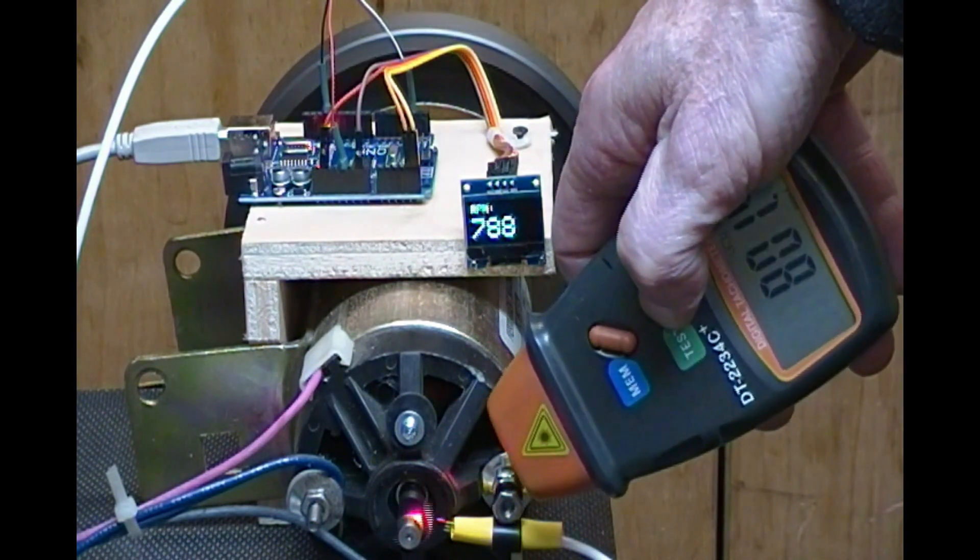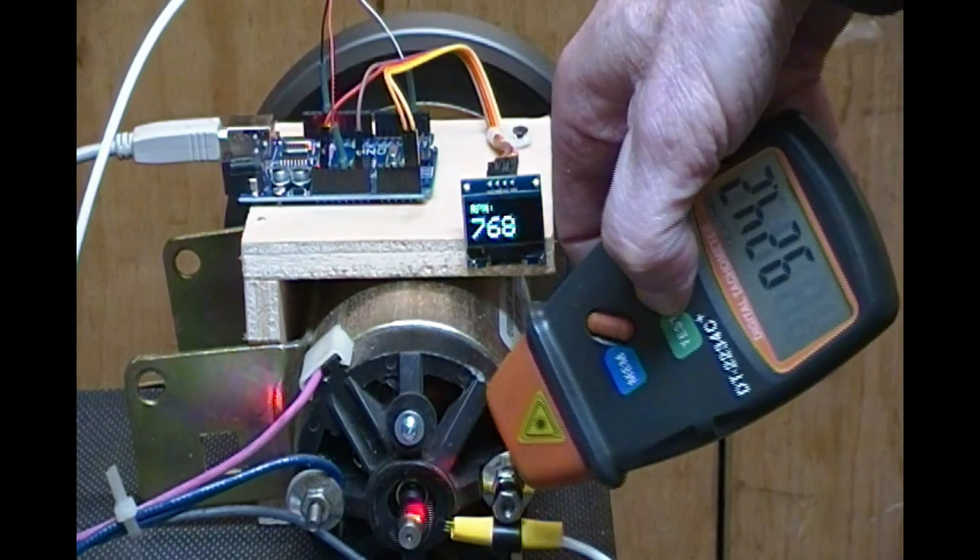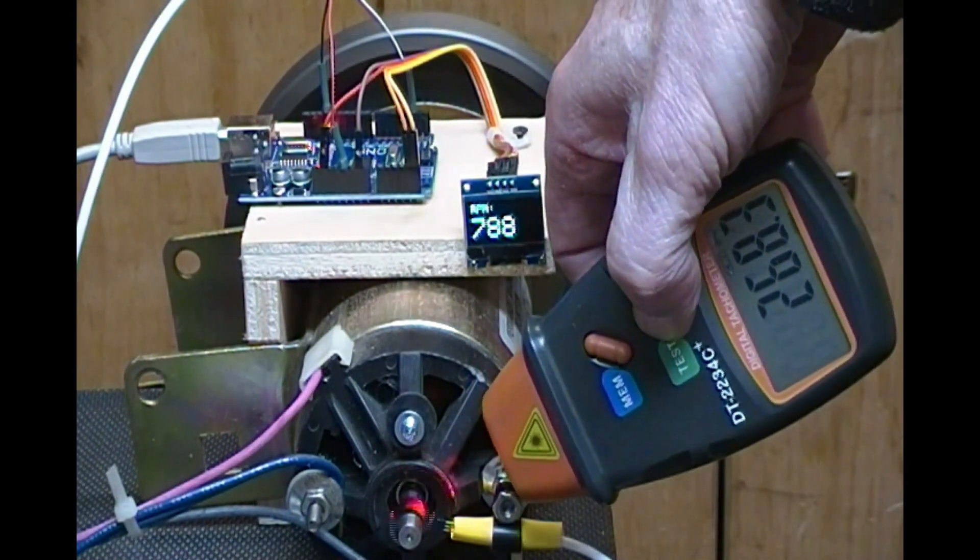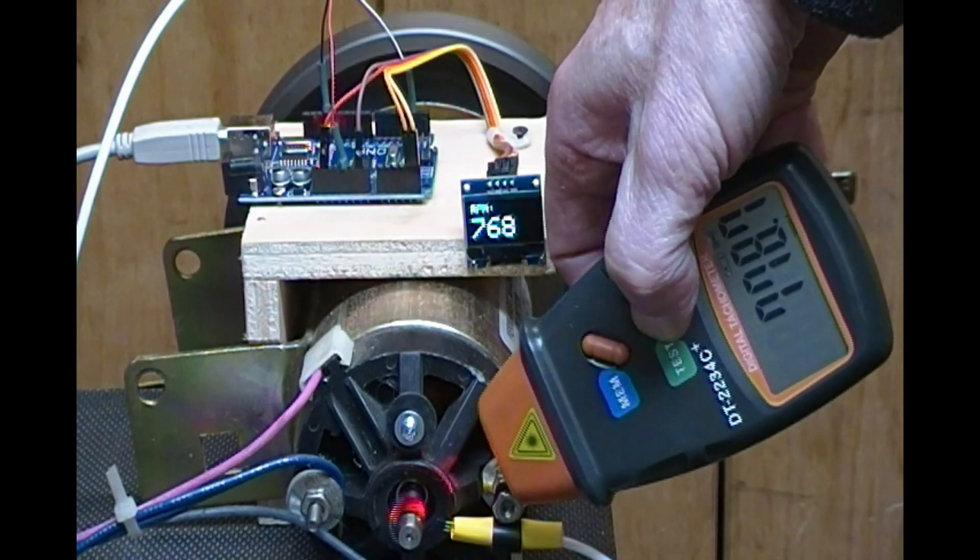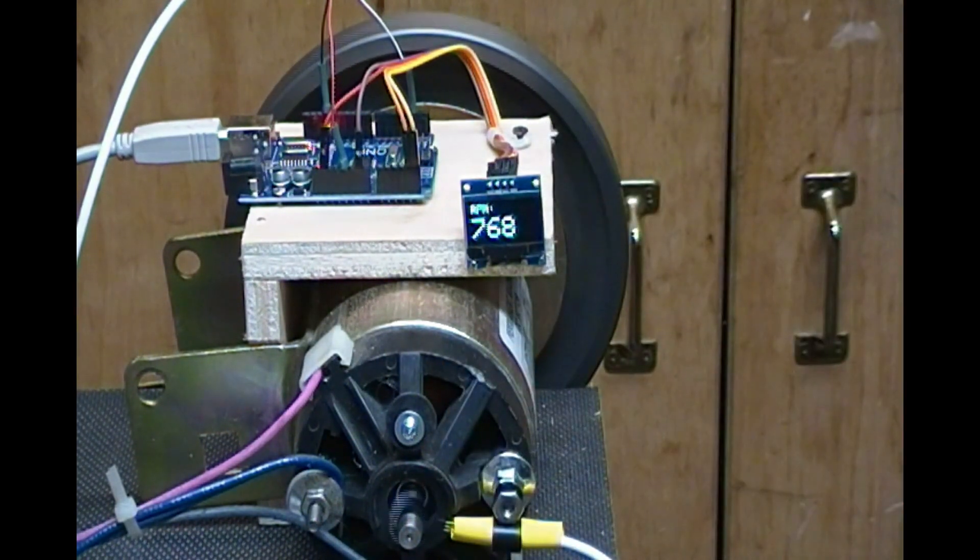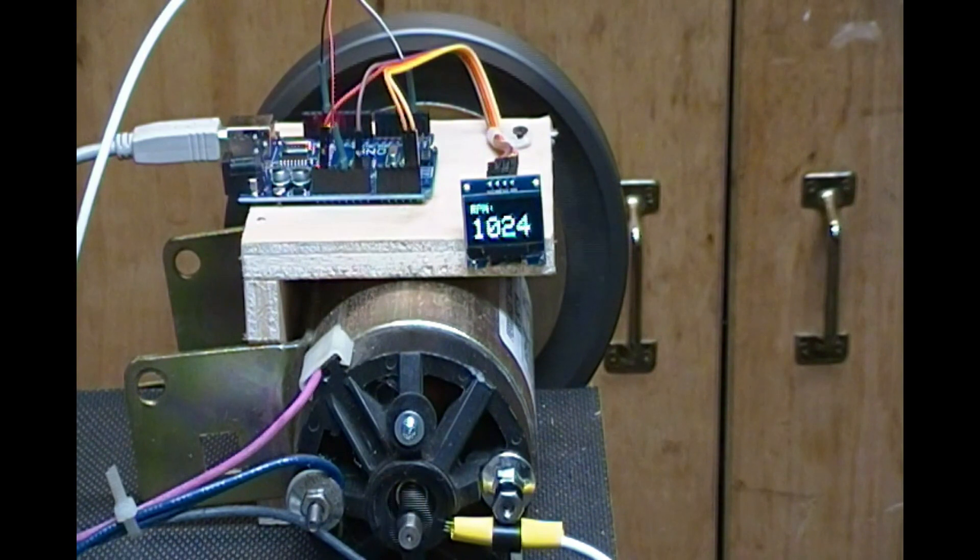I noticed that there was a bit of lag between the display RPM and the tachometer RPM. This is due to a 2 second time delay in the Arduino sketch. Having a bit of lag helps to improve accuracy in the sketch. I can live with that. I think the results are acceptable.